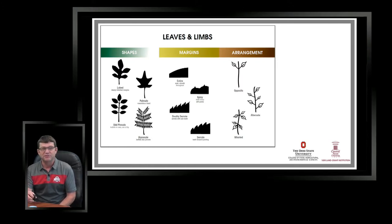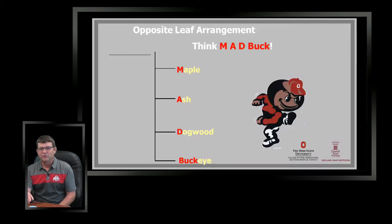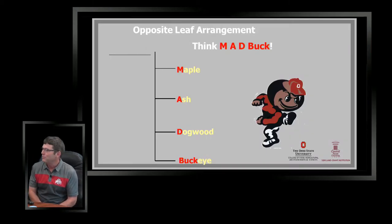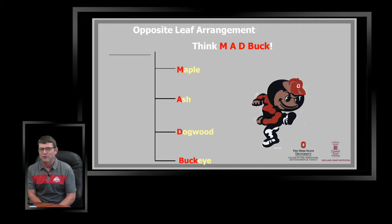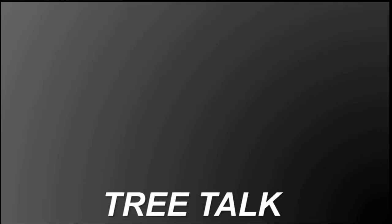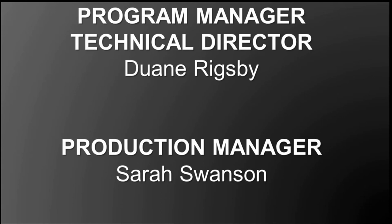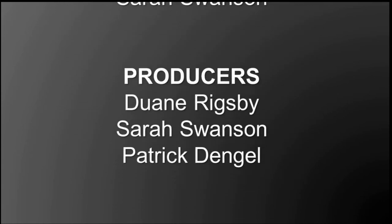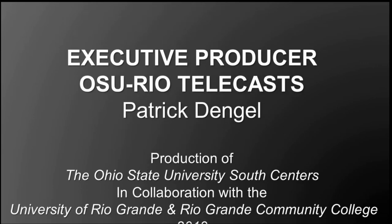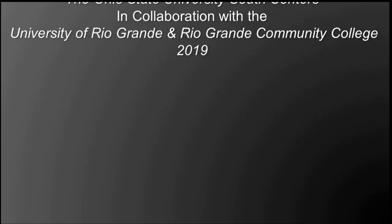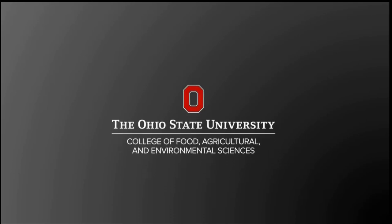When it comes to the opposite leaf arrangement, you have to remember the mnemonic "MAD Buck" — for our Buckeye fans, it's a great way to remember the trees that have a paired or opposite leaf arrangement: the Maples, the Ash, the Dogwoods, and the Buckeyes.